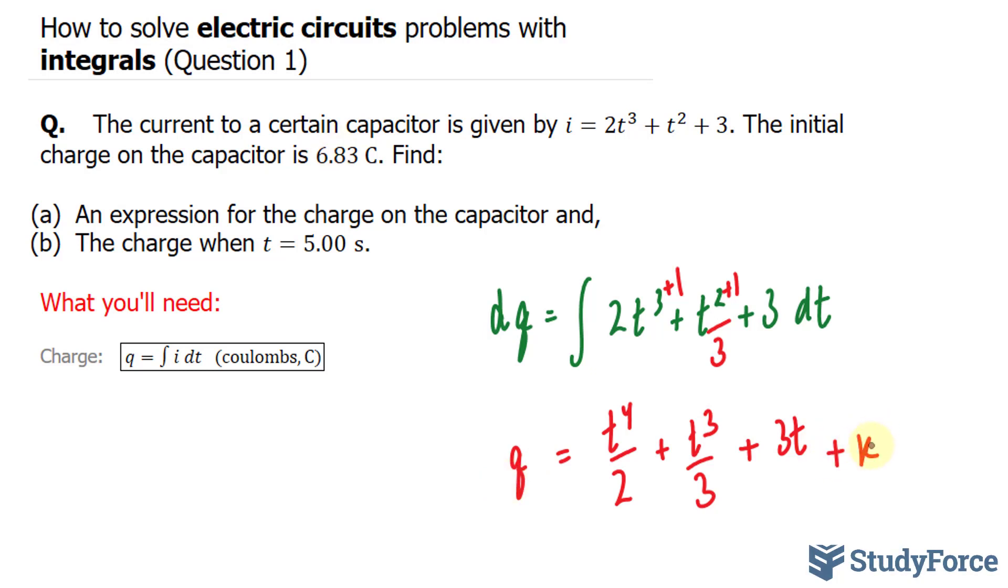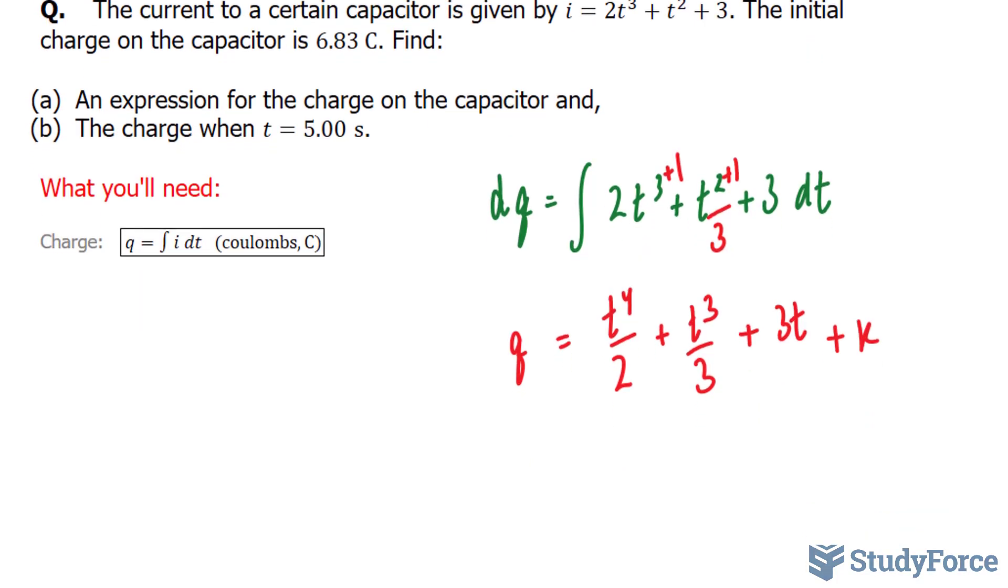Now to find this constant k, I'll substitute 6.83 into q. Because this is the initial charge, time is at 0. So I'll substitute t = 0 and q = 6.83 to find k.